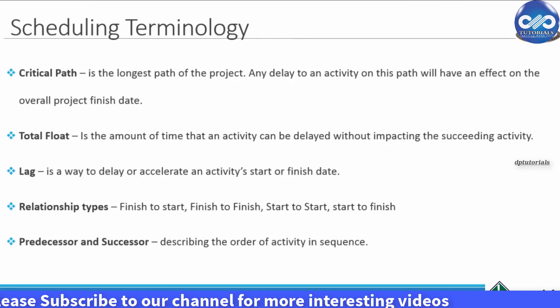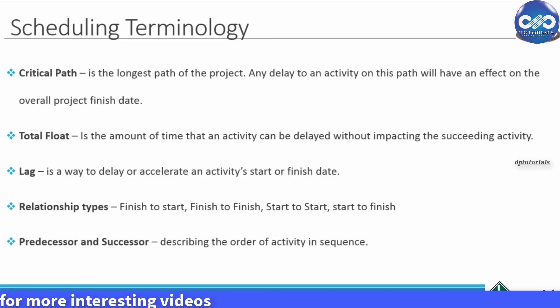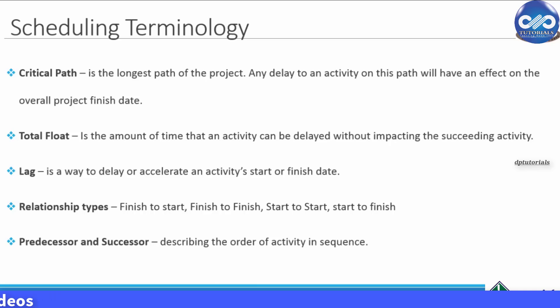Now let's see some terminology used in project management. Critical Path: This is the longest path of the project, and any delay to any activity of this path will have a serious effect on the overall finish date of the project.